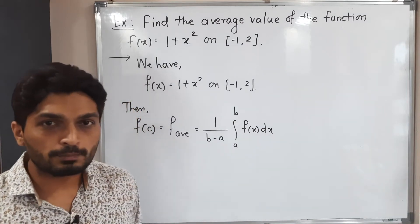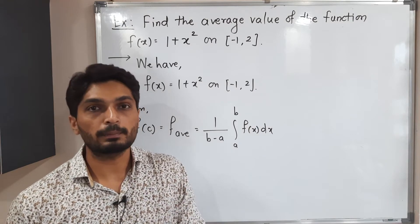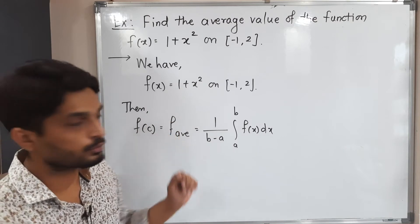What is a and what is b? What is the interval we have? Minus 1 to 2. So that's why a is minus 1 and b is 2. Let us put the values here and let us put the value of the function also.